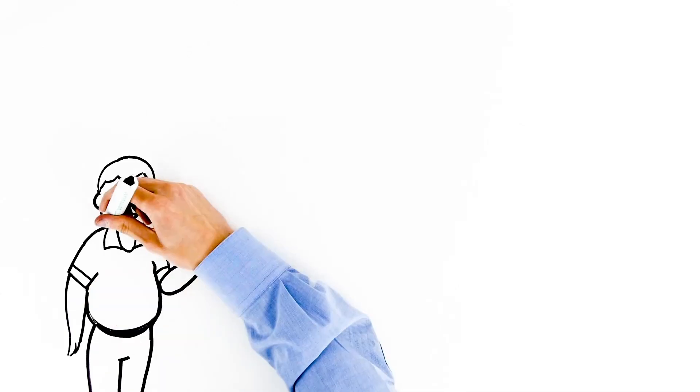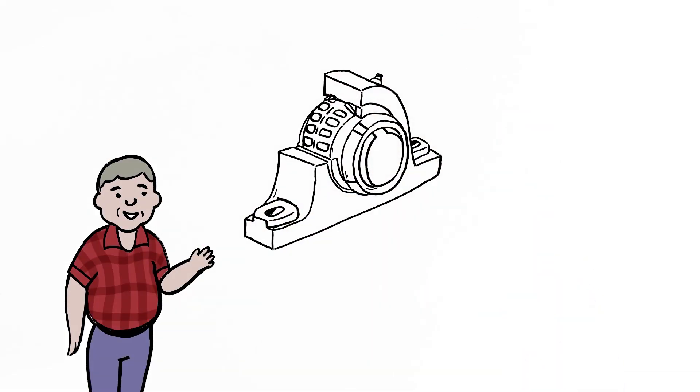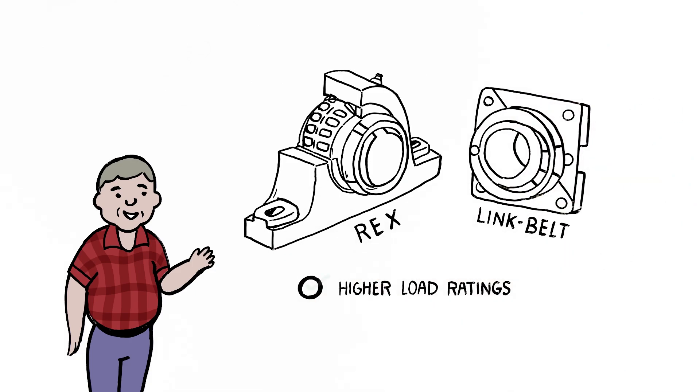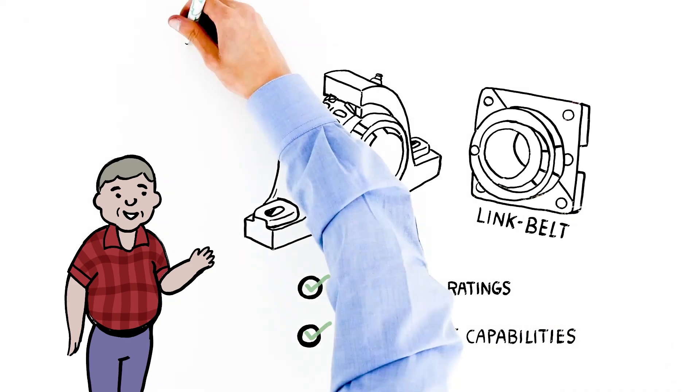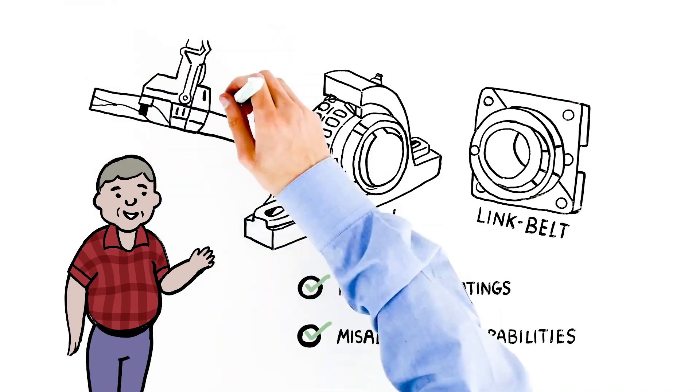uses Regal Rexnord bearings. Rex and Link Belt roller bearings are built for tough jobs. They can handle higher load ratings than the competition and have greater misalignment capabilities, so even with excessive forces, imperfect installations, and deflections on the shaft, they keep the lumber moving.